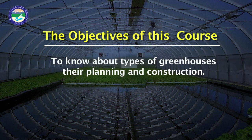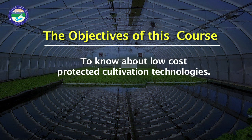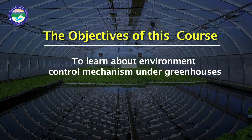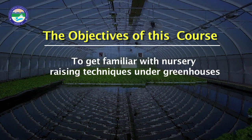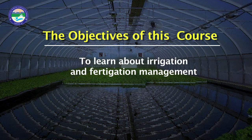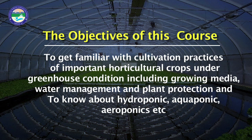The course objectives include: to know about types of greenhouse, their planning and construction; to know about low-cost protective cultivation technologies; to learn about environment control mechanisms under greenhouse; to get familiar with nursery raising techniques under greenhouse; to learn about irrigation and fertigation management; to get familiar with cultivation practices of important horticulture crops under greenhouse conditions, including growing media, water management and plant production; and to know about hydroponics, aquaponics and aeroponics.